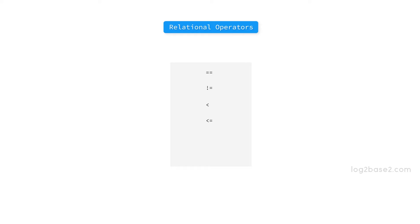Next is the greater than operator (>), which checks if the left operand is greater than the right operand. So 50 > 10 returns true and 5 > 10 returns false.